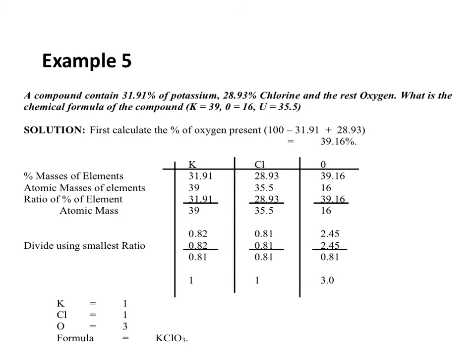Example 5. A compound contains 31.91% of potassium, 28.93% of chlorine, and the rest is oxygen. What is the chemical formula of the compound? The first step is to calculate the percentage of oxygen present. We are told potassium is 31.91 and chlorine is 28.93, so the percentage of oxygen equals 100 minus the sum of the percentages of potassium and chlorine.